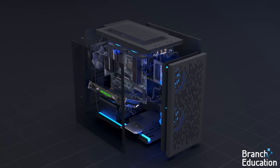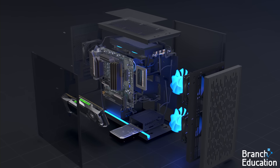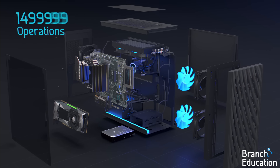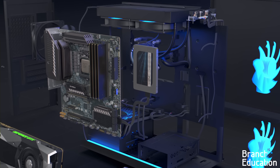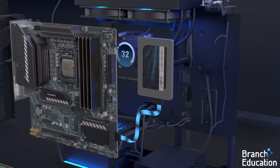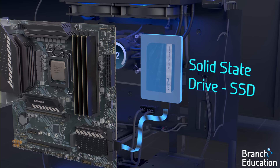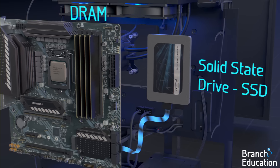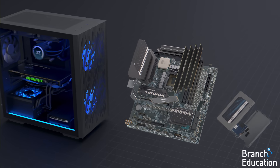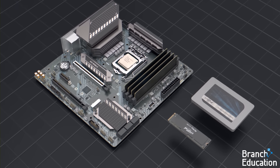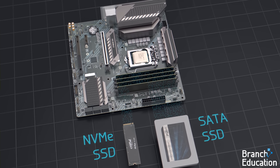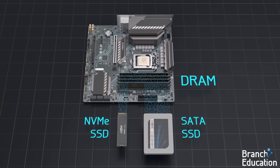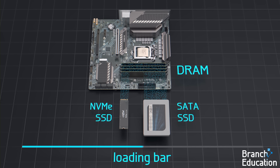Have you ever wondered what's happening inside your computer when you load a program or video game? Millions of operations are happening, but perhaps the most common is simply just copying data from a solid-state drive or SSD into dynamic random access memory or DRAM. An SSD stores all the programs and data for long-term storage, but when your computer wants to use that data, it has to first move the appropriate files into DRAM, which takes time — hence the loading bar.